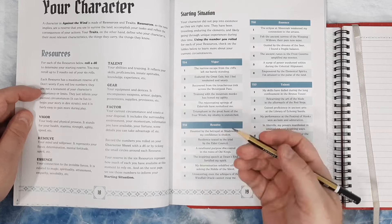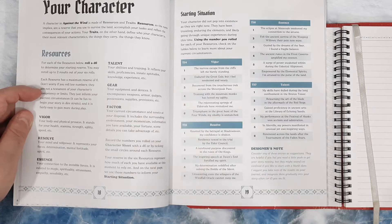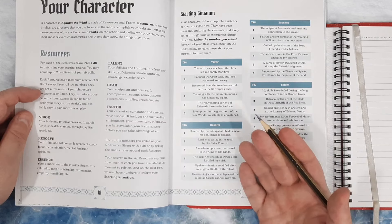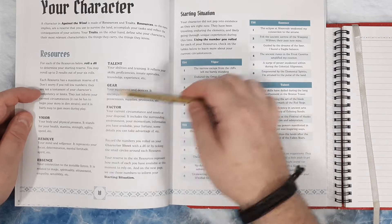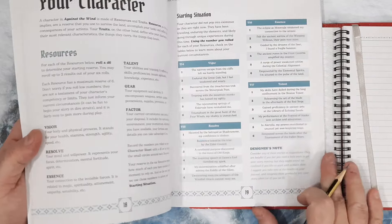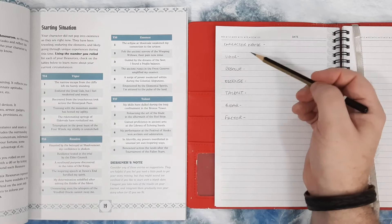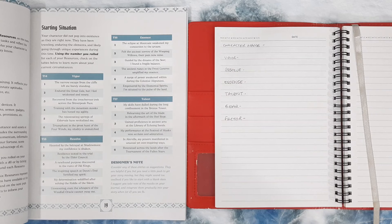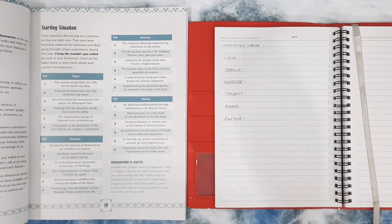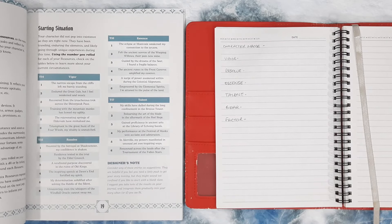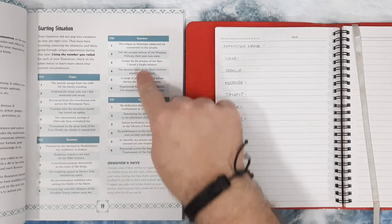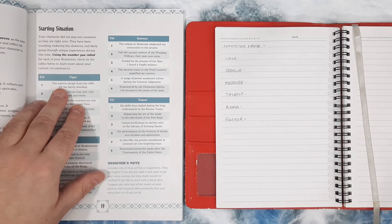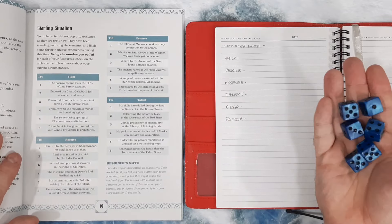So it's not permanent values. These are values that will go up and down, but you can have a maximum of six. First one is your vigor. Let's make sure this is on camera. First is your vigor, this is your body and physical prowess. Then is resolve, your mind and willpower. Essence is your connection to the invisible forces, so things like magic and spirituality. Talent represents your abilities and your training. Gear is your equipment and devices, so it includes things like weapons and armor. And then factor can reflect pretty much everything else.